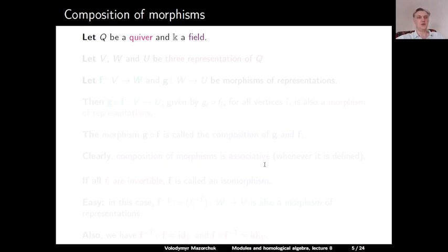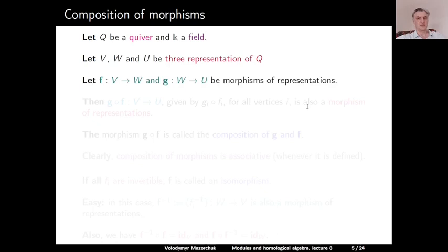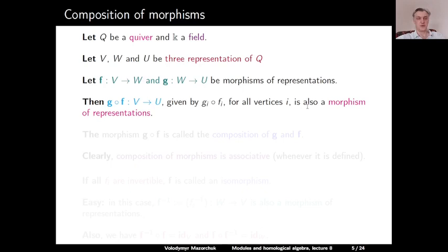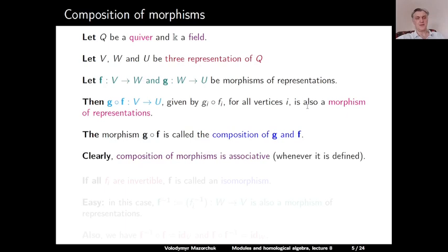Morphisms of representations can be composed. Let V, W, and U be three representations of Q, F a morphism from V to W, and G a morphism from W to U. Then we can define their composition G ∘ F as a morphism from V to U, where for each vertex i the map is given by G_i ∘ F_i. The composition of morphisms is associative because it is defined vertex-wise, and for each vertex we have the usual composition of maps.